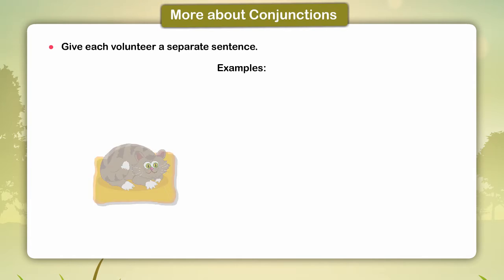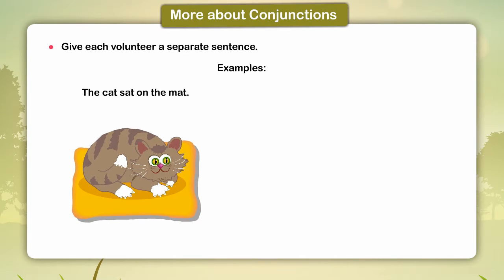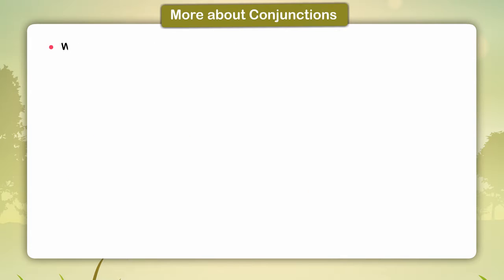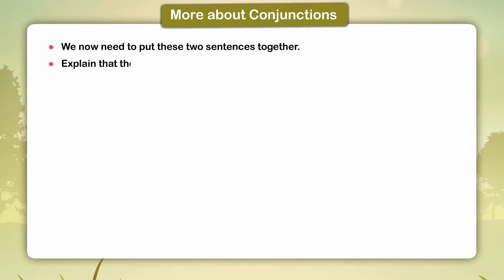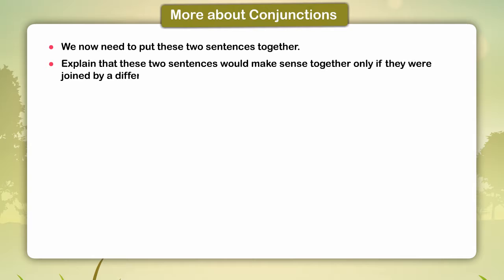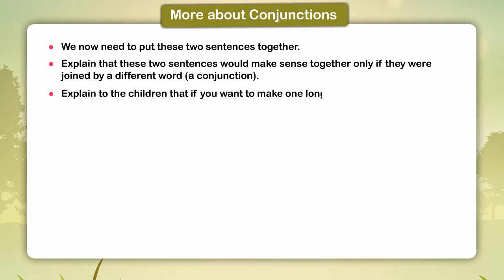Example sentences: 'The cat sat on the mat.' 'It was tired.' We now need to put these two sentences together. These two sentences would make sense together only if they were joined by a different word — a conjunction. Explain to the children that if you want to make one long sentence, you need to add a word that would join the sentences together.